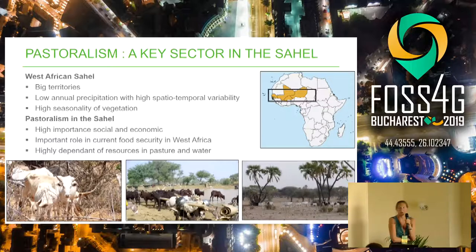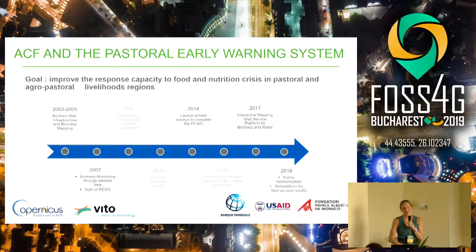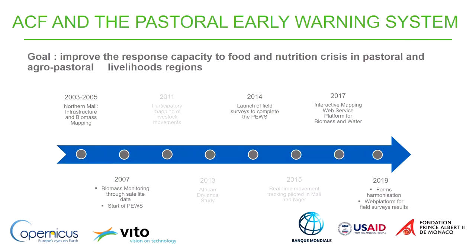Herders depend on two main resources: pasture and water to feed their animals. At ACF we have built pastoral early warning systems, with the goal of improving response capacity to food and nutrition crises in pastoral and agropastoral livelihoods regions. The history started in 2003 with biomass measurements in northern Mali, and in 2007 we started monitoring biomass with satellite imagery — that's really the starting point of the pastoral early warning system.